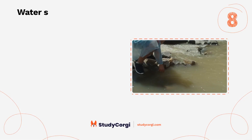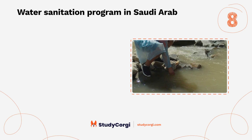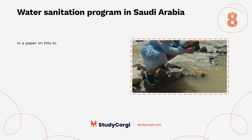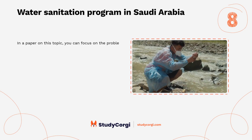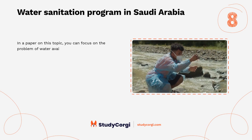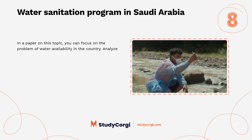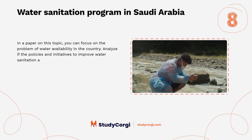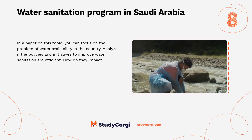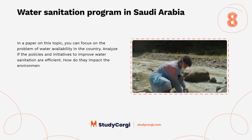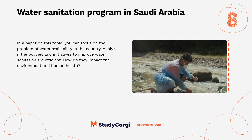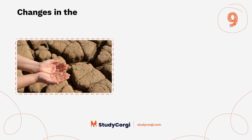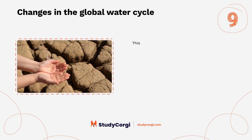Water sanitation program in Saudi Arabia. In a paper on this topic, you can focus on the problem of water availability in the country. Analyze whether the policies and initiatives to improve water sanitation are efficient, and how they impact the environment and human health.